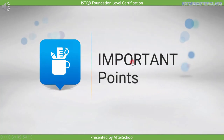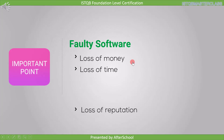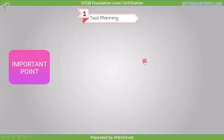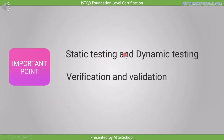Before we end this lecture, let's have a look at the important points. Testing is done to assess the quality of the software and to reduce the risk of software failure in operation. Faulty software can result in loss of money, time, reputation, and injury or death. Testing is a process which consists of different activities such as test planning, test monitoring, test analysis, test design, test implementation, test execution, and test completion. Testing consists of static and dynamic testing, and consists of verification and validation processes. All these important points are available as a resource attached with this video.